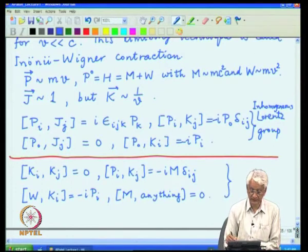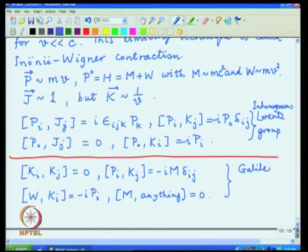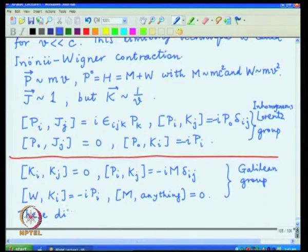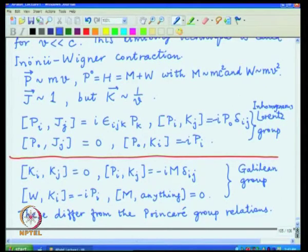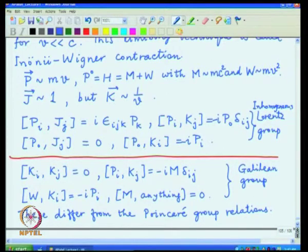These are the non-trivial relations for the Galilean group — the ones which are different from the Lorentz algebra. The ones which are the same I have not bothered to write down. In particular, one can replace p_0 by the operator H in all other cases; J and p remain the same. This is essentially the simplified Galilean algebra.